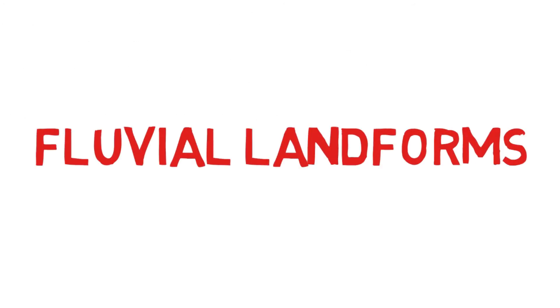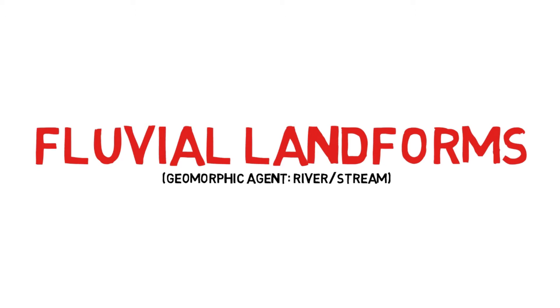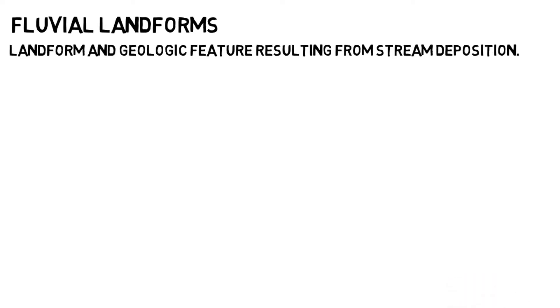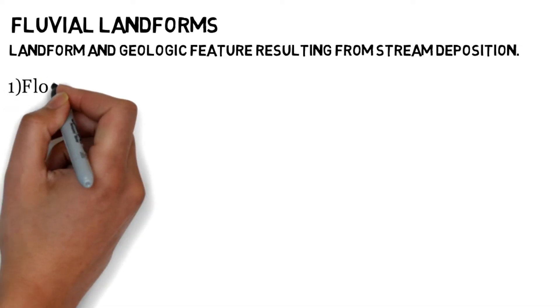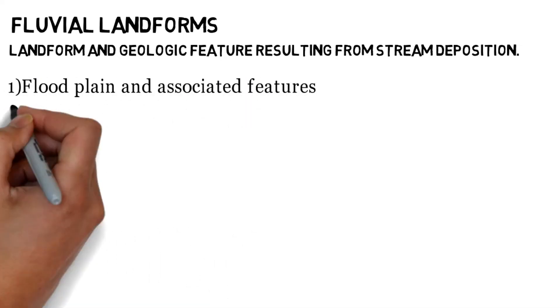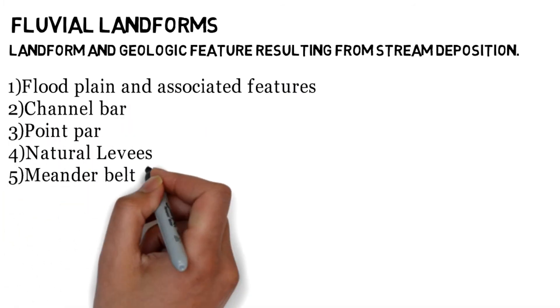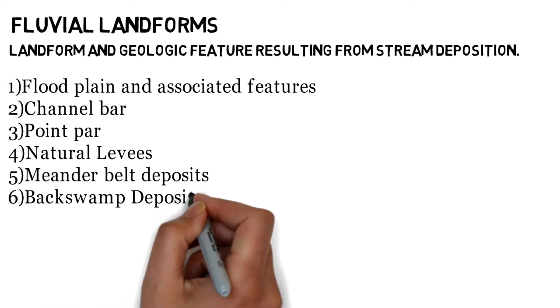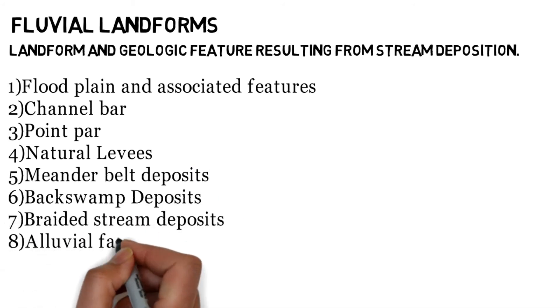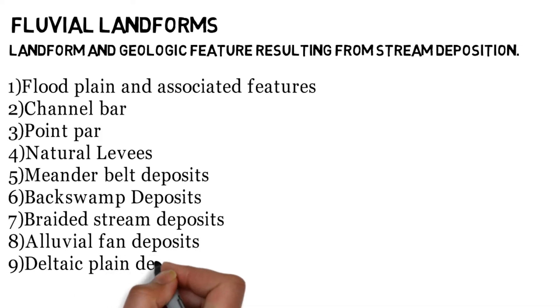In this video we are going to start with fluvial landforms, whose geomorphic agents are rivers and streams. Landforms and geologic features resulting from stream deposition include: floodplain and associated features, channel bar, point bar, natural levees, meander belt deposits, back swamp deposits, braided stream deposits, alluvial fan deposits, and deltaic plain deposits.